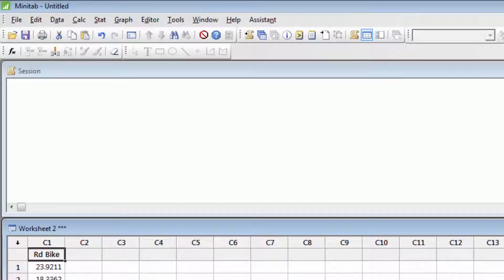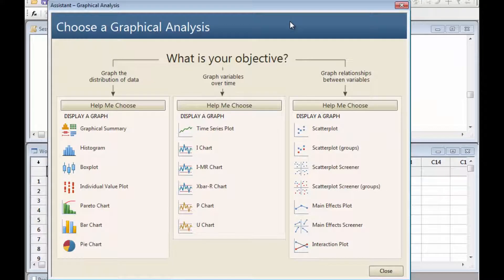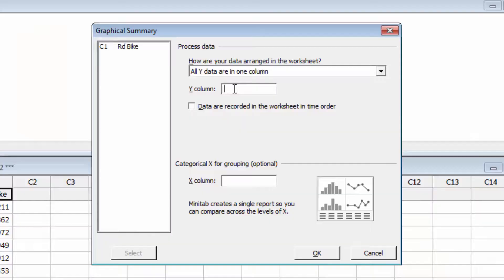Seeing your data in graphical form is always a good place to start, so select Assistant Graphical Analysis. To look at the distribution of how long it takes Joel to bike to the office, click the Graphical Summary button. Enter Road Bike as the Y column, and check the box to tell the Assistant these data were recorded in time order.